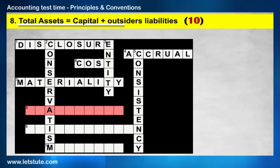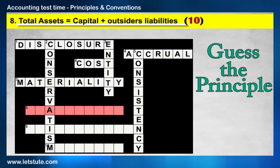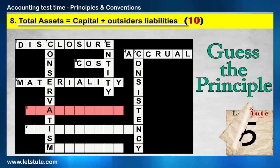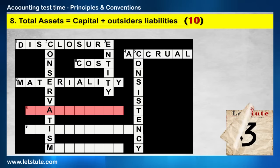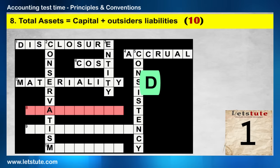The eighth one is across: Total assets is equal to capital plus outsiders' liability — which concept applies to this equation? The word starts with D.